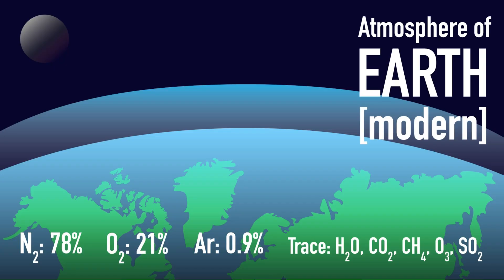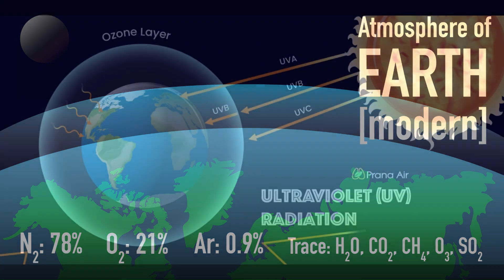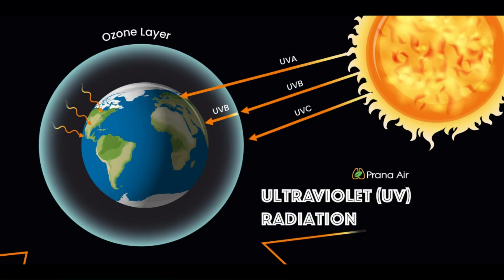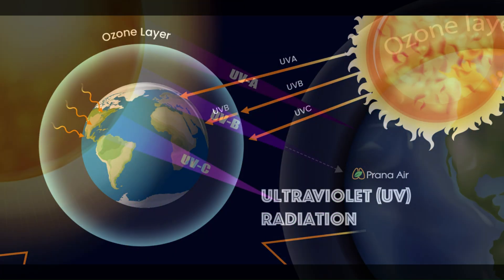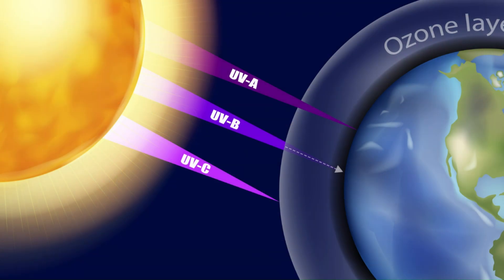Today, the modern atmosphere consists primarily of nitrogen (78%) and oxygen (21%), with trace amounts of argon, carbon dioxide, neon, and other gases. The ozone layer also formed, helping to protect life on Earth from harmful ultraviolet radiation.